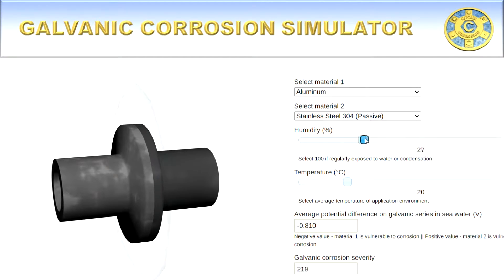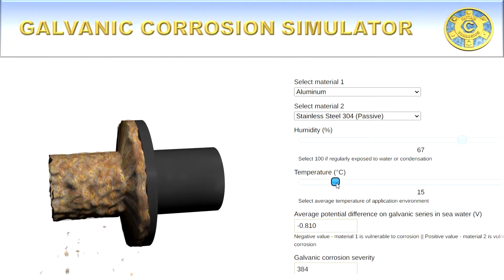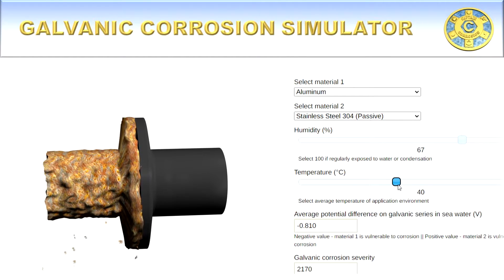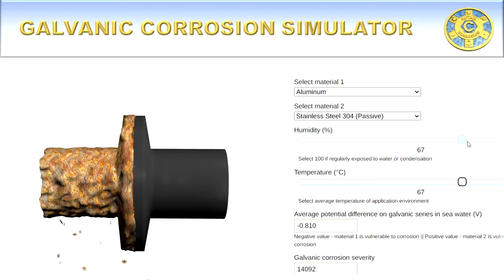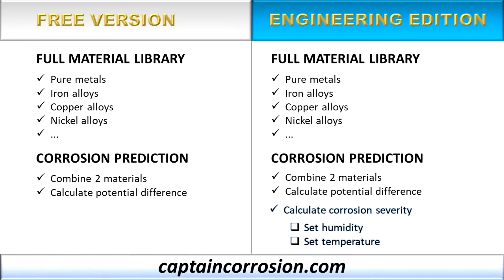Hello Corrosioneers! You are watching a Captain Corrosion video, where we will introduce you to our Galvanic Corrosion Simulation Tool. This online tool is particularly useful as it can be used to predict the compatibility of combined materials. The tool is available on our website and it comes in a free version and an engineering edition with additional features.